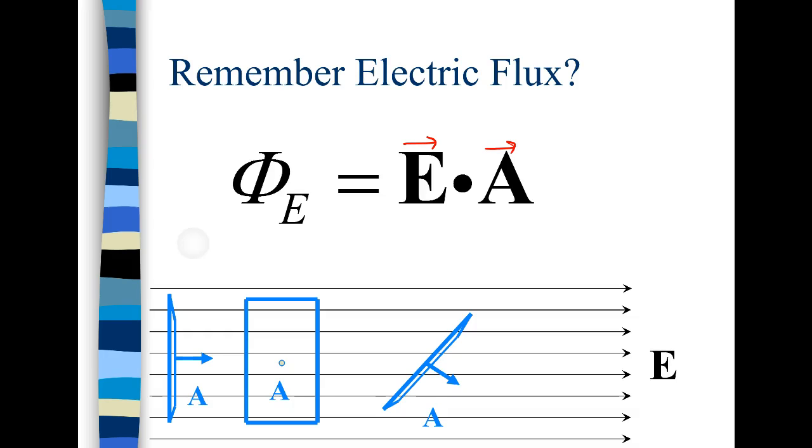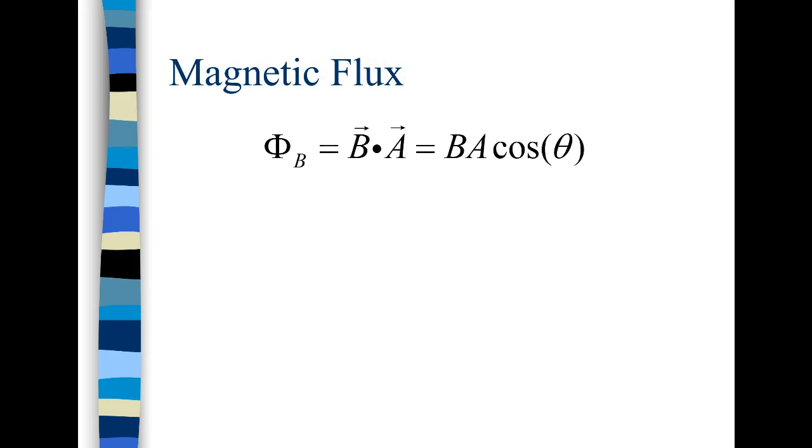Well we have a similar calculation for magnetic flux. Magnetic flux is simply the dot product of the magnetic field dotted with the area, so it's BA cosine theta. B is the magnetic field strength in Teslas, so if it's in Gauss you have to convert it.